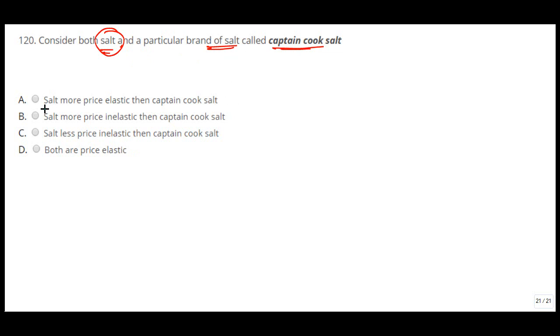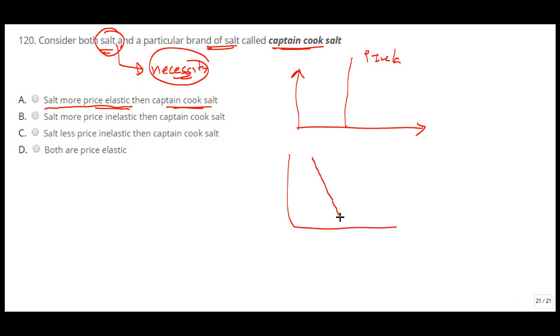So we are saying that the first option is salt is more price elastic than Captain Cook salt. Note that salt is a kind of necessity good. It is very much required and if you see the elasticity of salt, we can say not perfectly inelastic, but to an extent the demand would be inelastic.